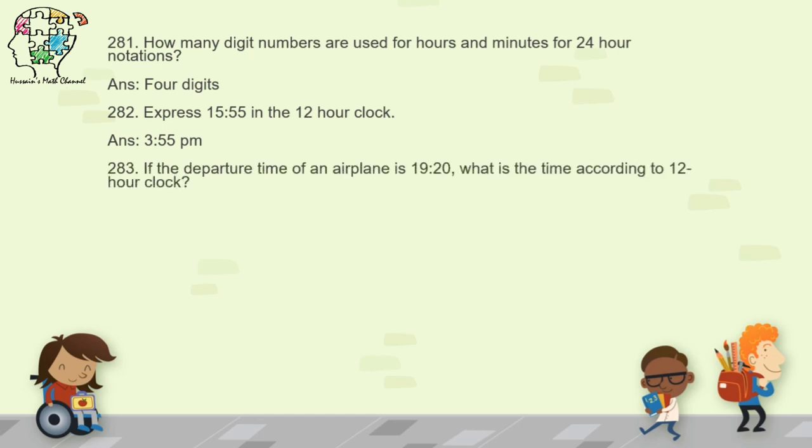PM means post-meridian. Question 283: if the departure time of an airplane is 1920, what is the time in 12-hour clock? Subtract 12 from the given time and write PM. The answer is 7:20 PM.